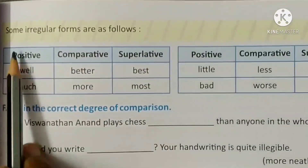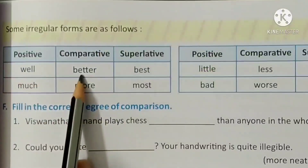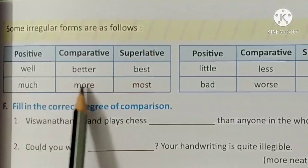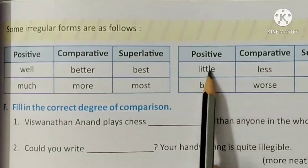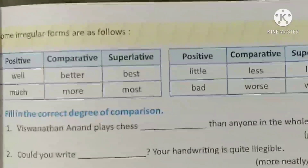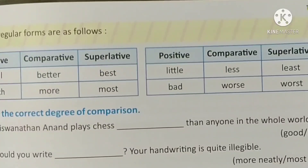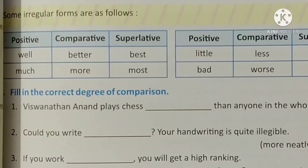Some irregular forms are as follows: well, better, best; much, more, most; little, less, least; bad, worse, worst. So students, here we complete our chapter on adverbs and comparison of adverbs. You have to fill in all the exercises with the help of these rules.